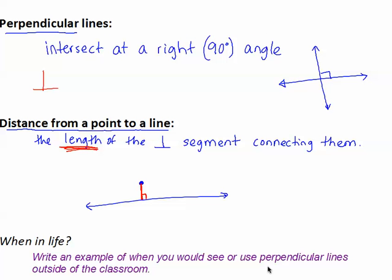Before we look at the examples, let's talk about when in life do we see or use perpendicular lines. On your note sheet, write an example of when you would see or use perpendicular lines outside of the classroom. Think about if you are traveling from a point to a line — you have to go straight there at a right angle. Can you think of a scenario that uses that?